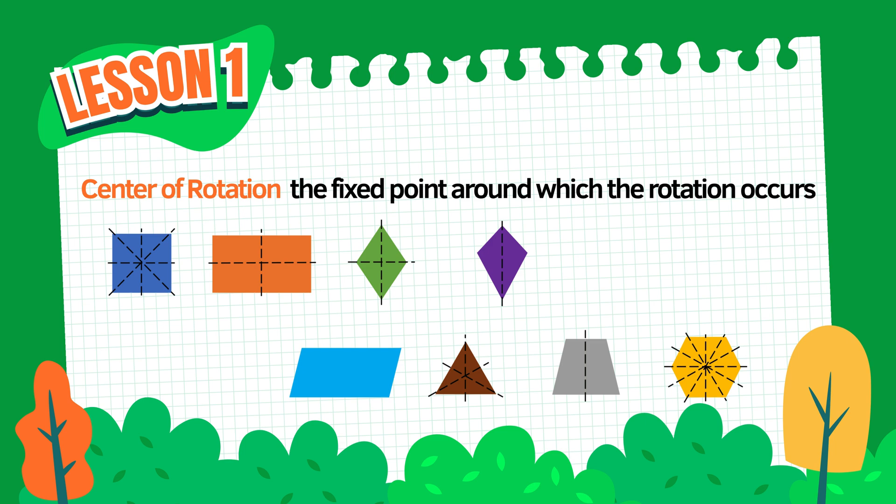For a rhombus, the diagonals also meet at the center. That intersection point is the center of rotation and also where the shape balances. And in a regular hexagon, the center of rotation is again at the point where all diagonals and lines of symmetry meet.